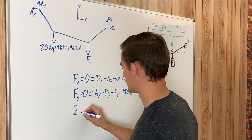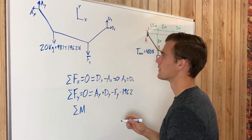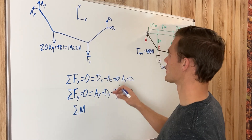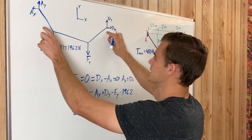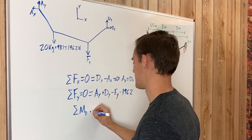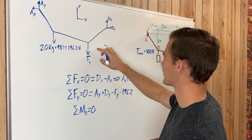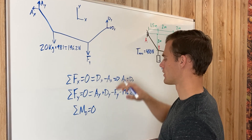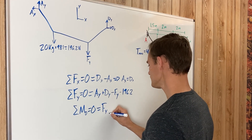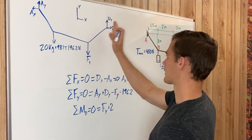We'll sum moments about a point that eliminates the most unknowns. Summing moments about point D equals zero. F sub y will cause counterclockwise rotation, which we define as positive, so that gives us positive F sub y multiplied by 2, since it is 2 meters away from point D in the horizontal direction.